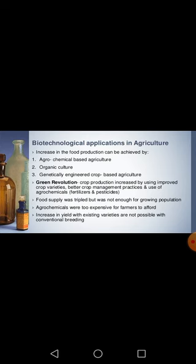The first approach is agrochemical-based agriculture. The Green Revolution came to India in the 1960s, in which crop production was amplified at a great rate. Crop production increased by using improved crop varieties, better crop management practices, and use of agrochemicals — meaning fertilizers and pesticides. During that time, farmers used improved crop varieties along with the best fertilizers and pesticides.